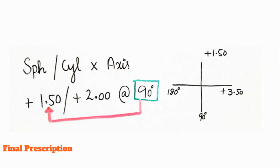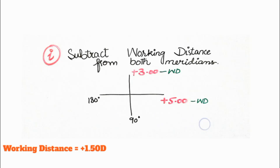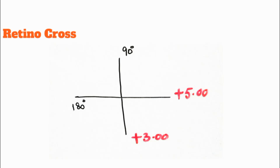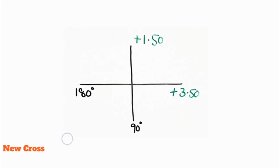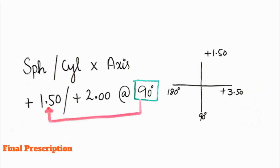This is how you convert the cross into the prescription. We neutralized the meridians at plus 3 and plus 5, and the final prescription is plus 1.50 sphere and plus 2 cylinder at the axis of 90 degrees. This is the final prescription and how you convert the retinoscopy cross into a written prescription. In case of any query, comment in the comment section — thank you so much.